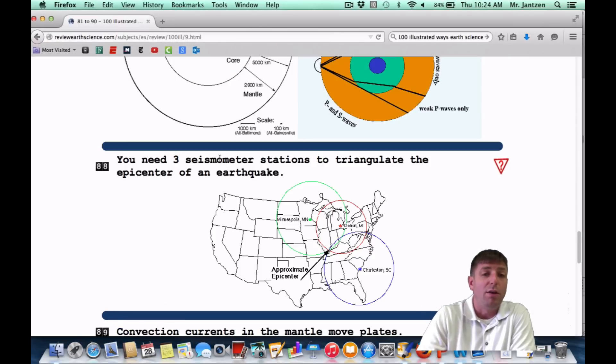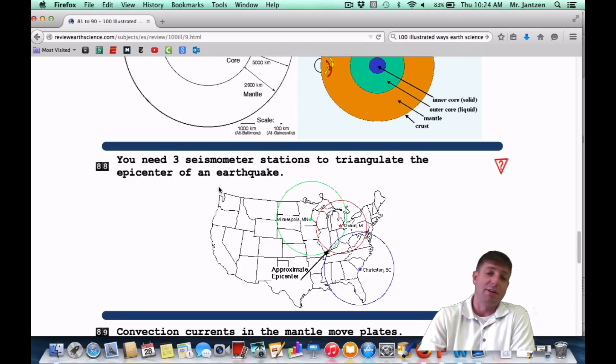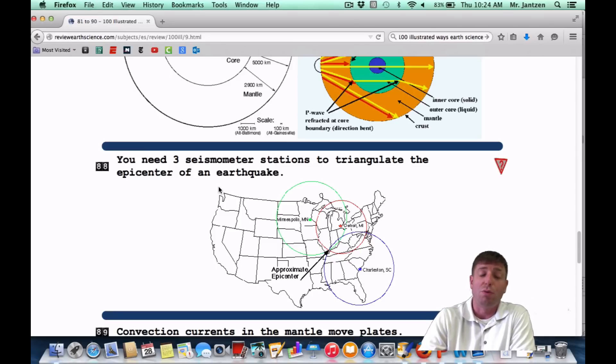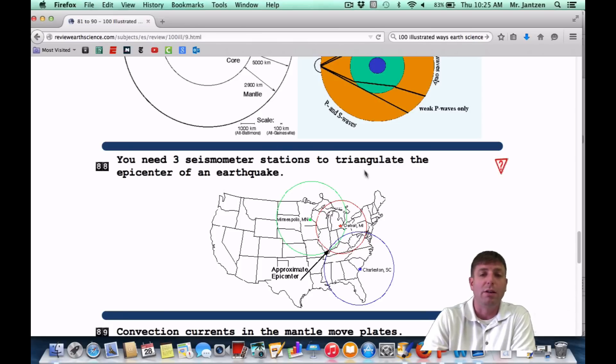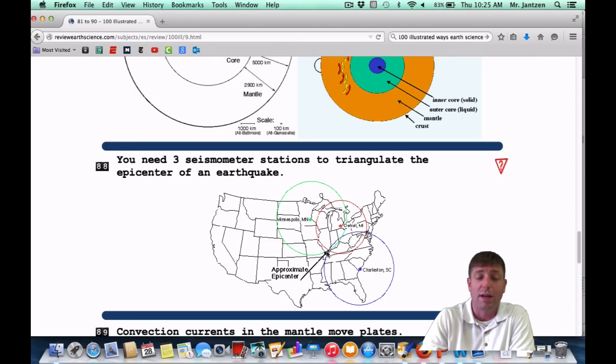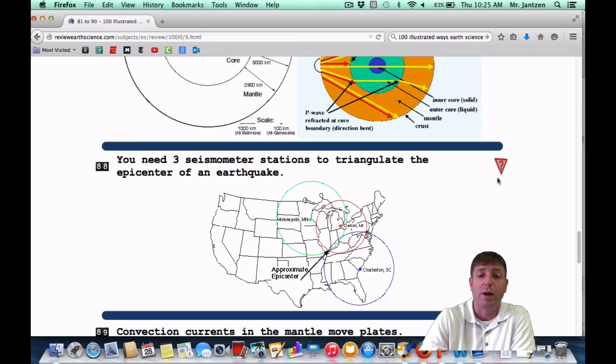Great. Number 88: you need three seismometer stations to triangulate the epicenter of an earthquake. So once again, one seismogram is going to give you how far away the earthquake occurred. It's not going to give you where it occurred. It's going to give you how far away it occurred. You need three seismograms of three seismometer stations in order to triangulate or meet them up. So you need a minimum of three. And when all three of them meet up, that's where the earthquake occurred. That's your epicenter right there. So a big difference between the words epicenter distance and epicenter location. Epicenter distance is how far away it is. Epicenter location is where it actually occurred.